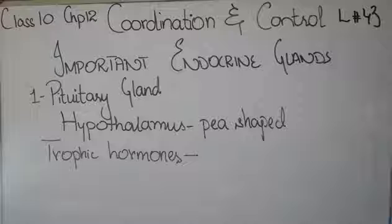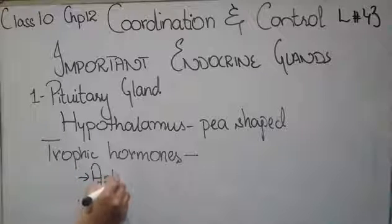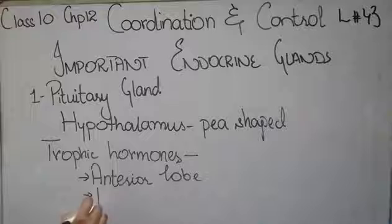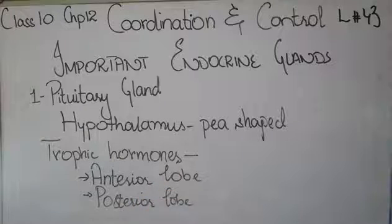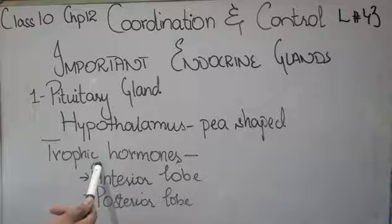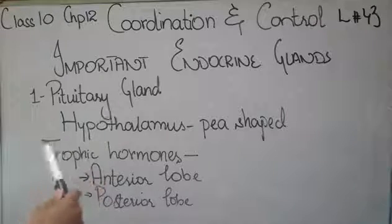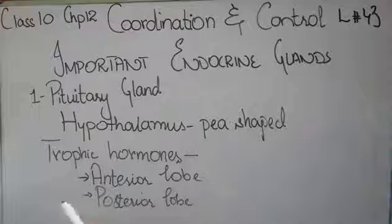This gland can be divided into two portions: the anterior lobe and the posterior lobe. The anterior lobe is present on the front side, and the posterior lobe is located at the back side. So the pituitary gland releases two types of hormones — trophic hormones which control other endocrine glands and their secretions, and other hormones which target body tissues directly.